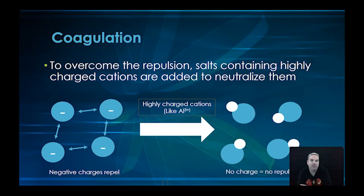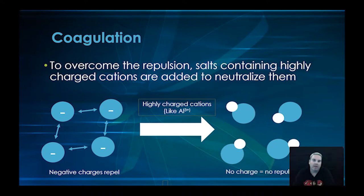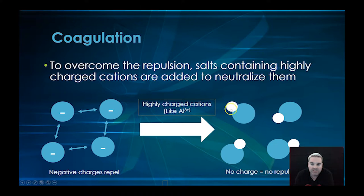To overcome the repulsion, we put in salts containing highly charged cations. Aluminium is a really good example — it has a high charge density. We've got the surface of our silicates which are repelling each other, and we add in our highly charged cations that neutralize the surface of the silicates — there's no charge, which means there's therefore no repulsion.